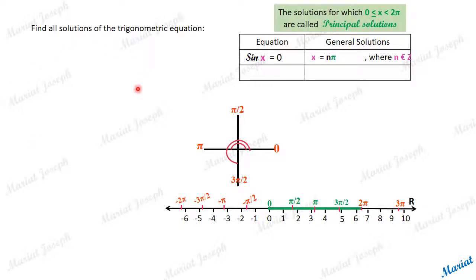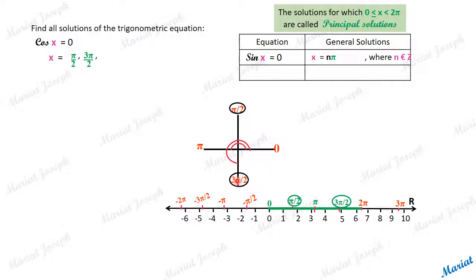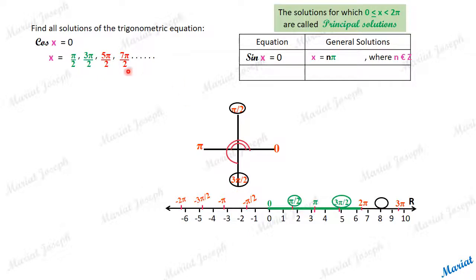Next equation: cos x = 0. The first value of x for which cos x = 0 is pi by 2 — cos(pi/2) = 0, so pi/2 is a solution. Also, cos(3pi/2) = 0, so 3pi/2 is a solution. Pi by 2 has a co-terminal angle after one full rotation: pi/2 + 2pi = 5pi/2 is also a solution. Co-terminal with 3pi/2 is 7pi/2 (since 3pi/2 + 2pi = 7pi/2), and so on.